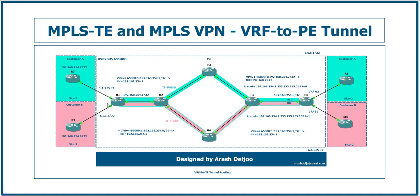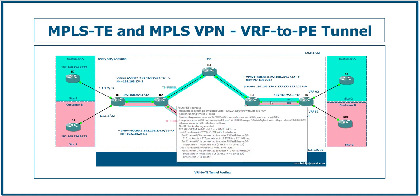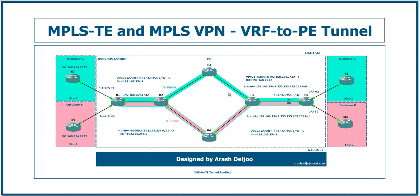This is the core problem: all customer addresses are advertised with one next-hop by default, so we cannot differentiate between customers and cannot steer each customer's traffic to a different TE tunnel. The solution is straightforward — if we can configure R1 to advertise different next-hops to Router 6 for different VRFs, the problem is solved. We can configure one loopback address on Router 1 per VRF — for example Loopback 1.